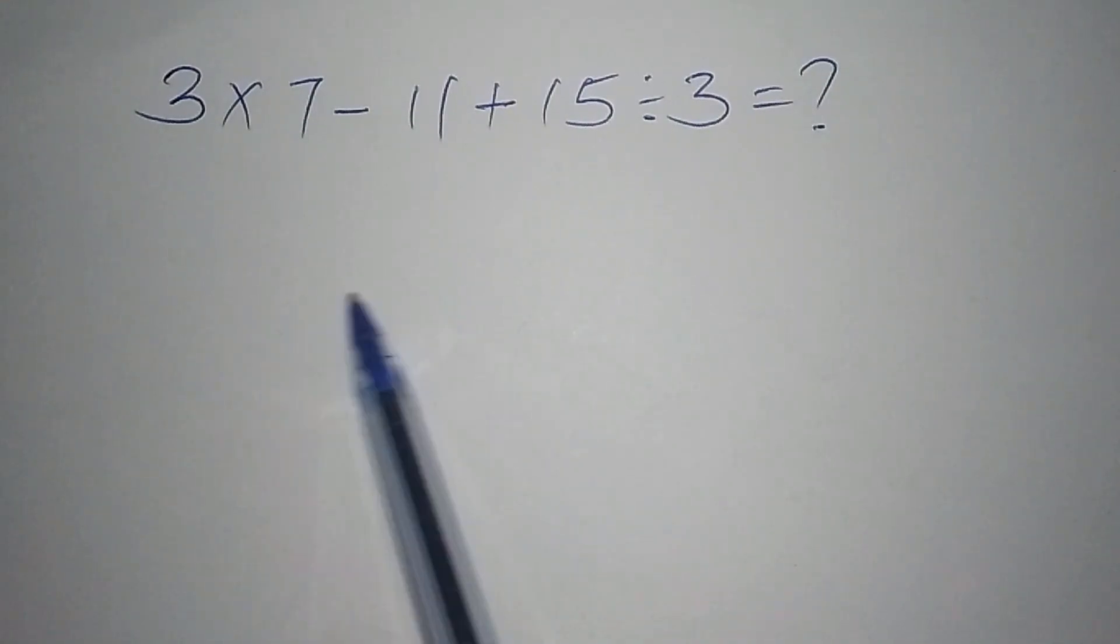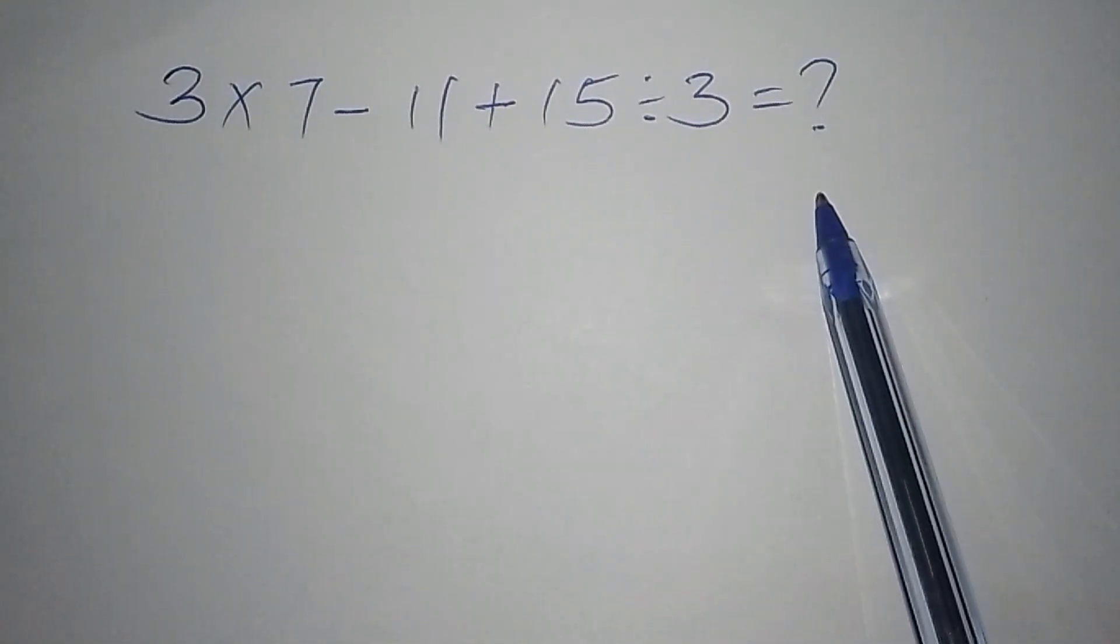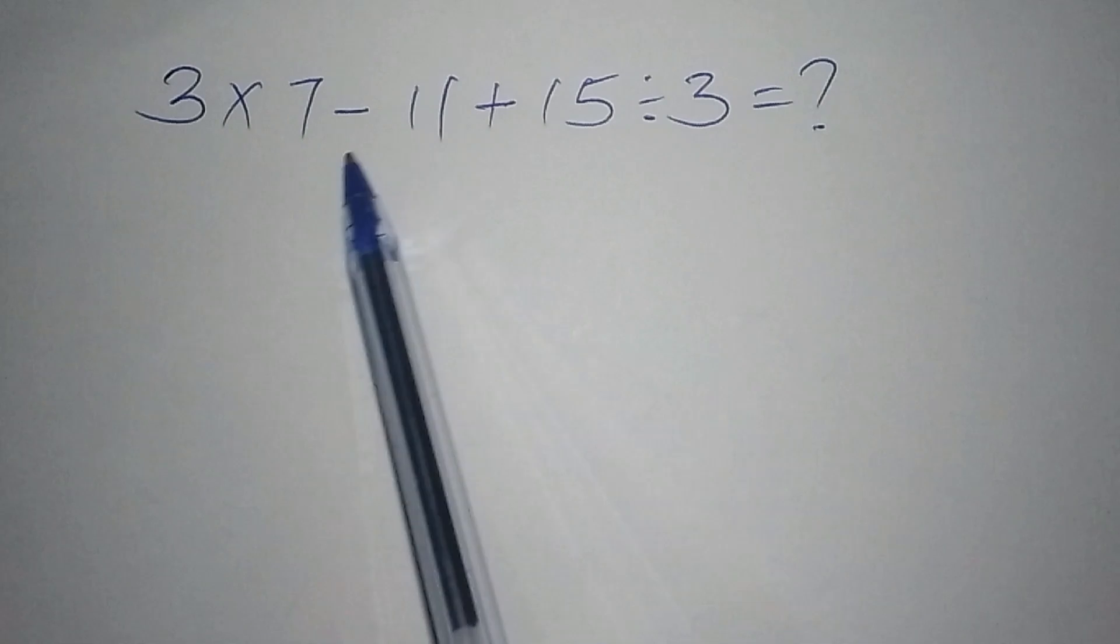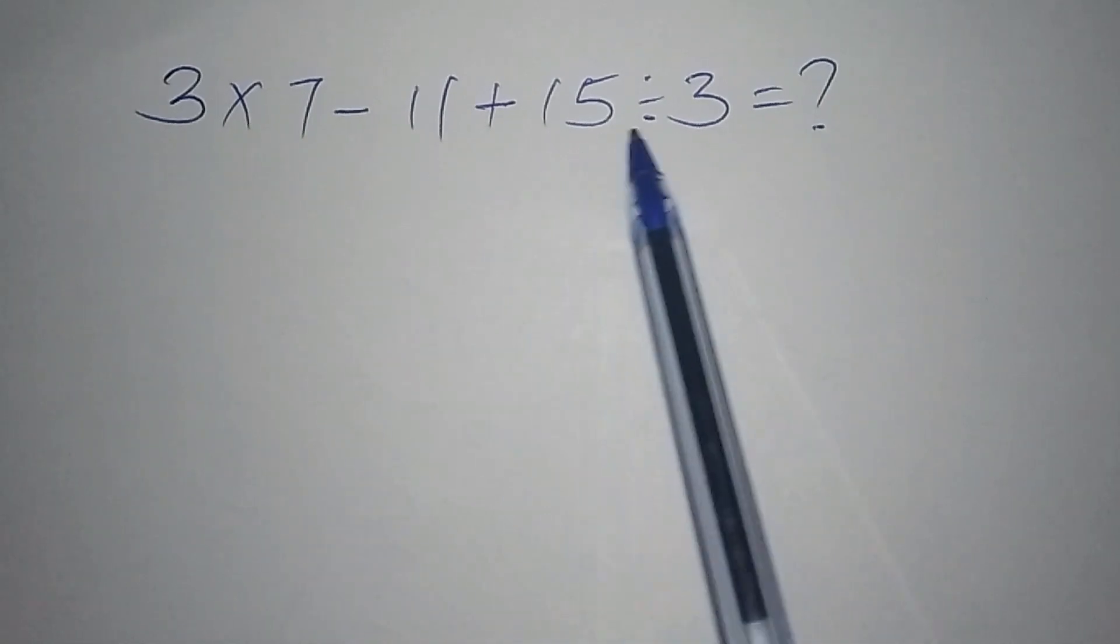I want to show you the hidden methods that are usually there in solving this kind of maths operation. We have 3 times 7 minus 11 plus 15 divided by 3.